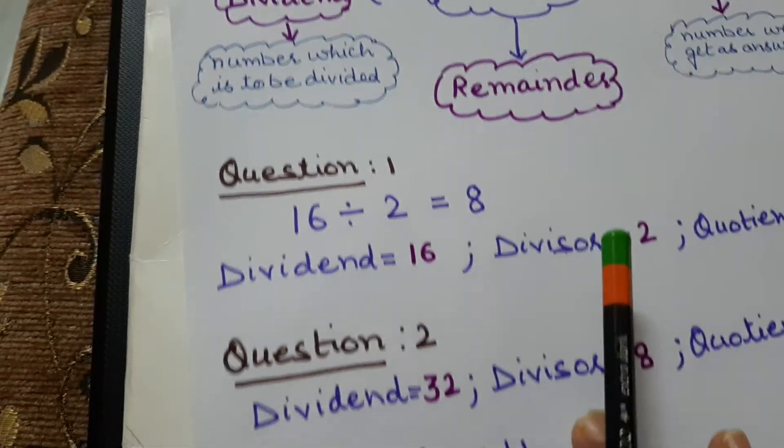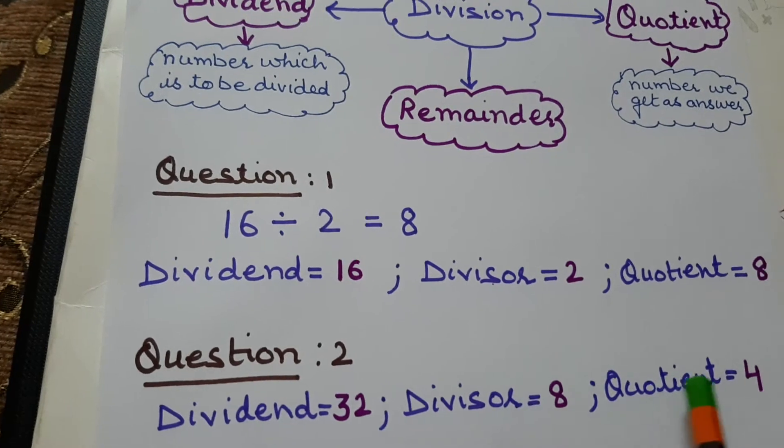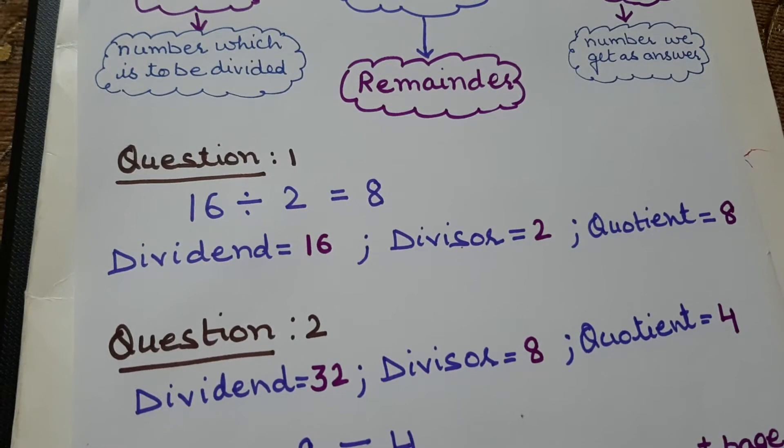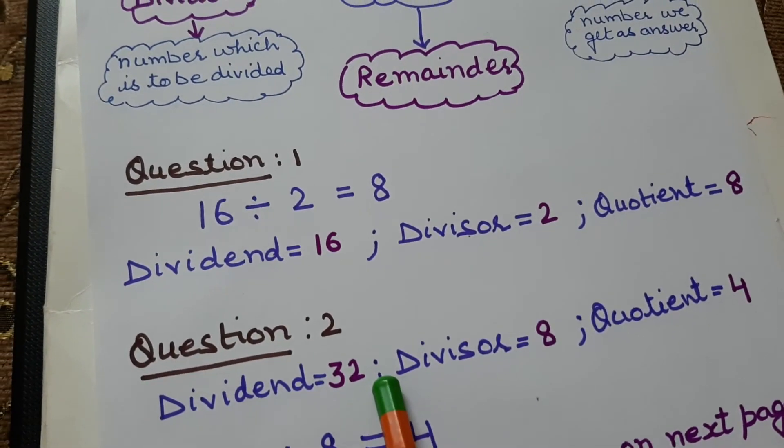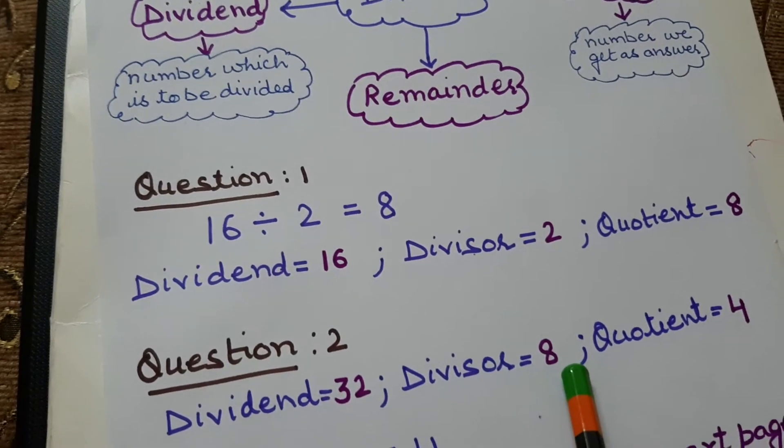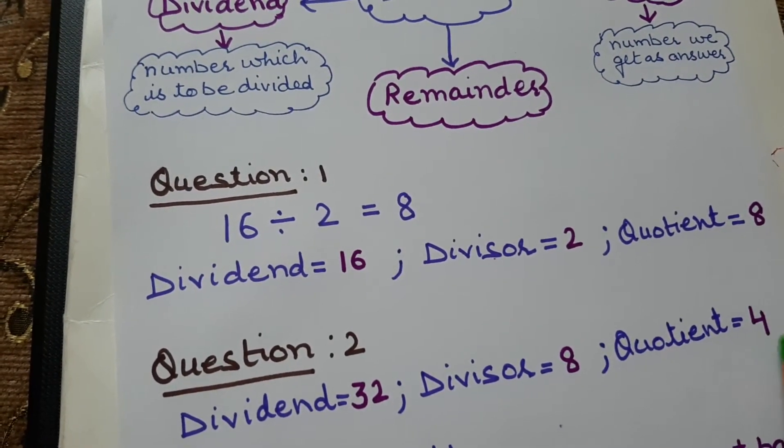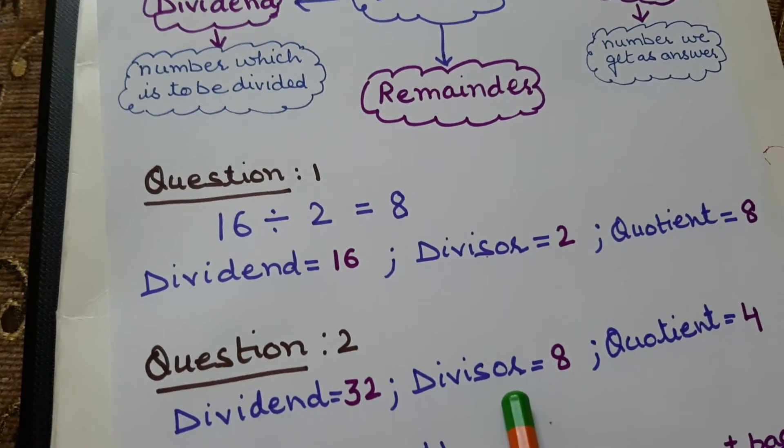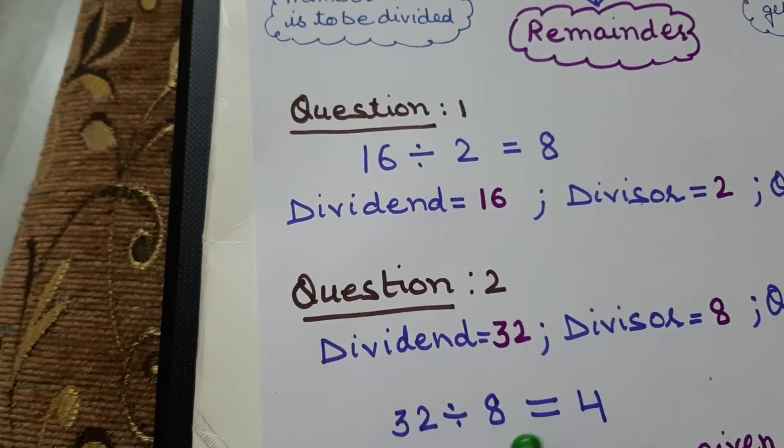Next question number 2. Now in this sum, these terms are given to us and we have to make statement by using these terms. So in this question, dividend is equal to 32, divisor is 8 and quotient is 4. So first dividend is divided by divisor. So we will write 32 divided by 8.